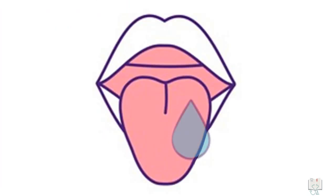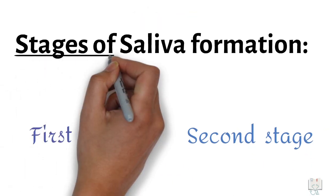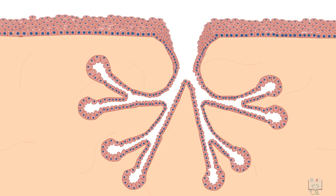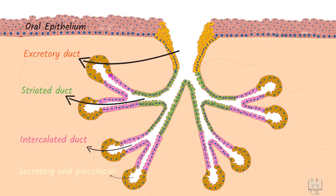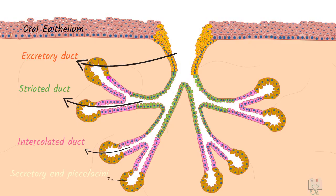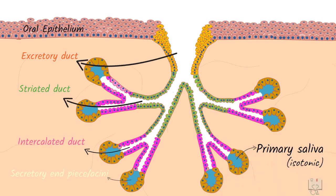Saliva is the fluid present in the oral cavity which is formed by various salivary glands. Its formation occurs in two stages, which structurally take place in two different parts of the salivary glands. In the first stage, cells of the secretory end pieces or salivary acini produce saliva, which at this stage is known as the primary saliva and is isotonic.